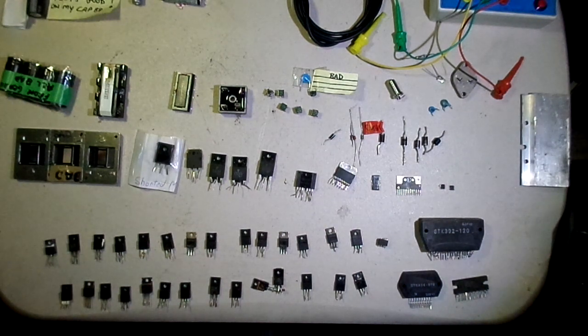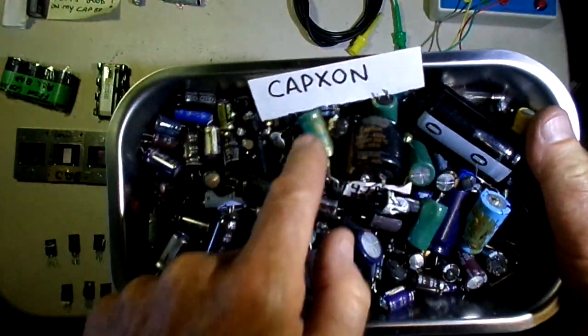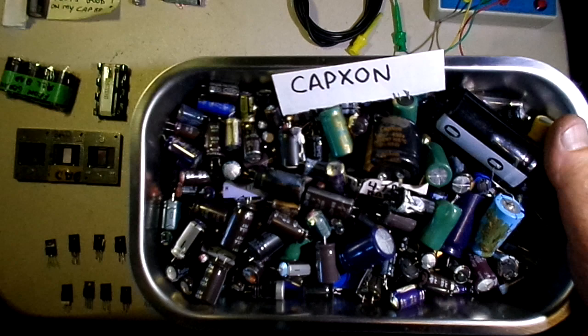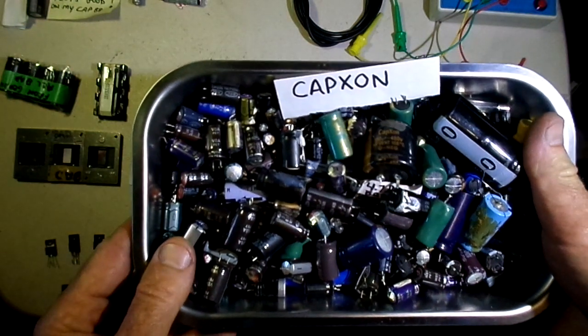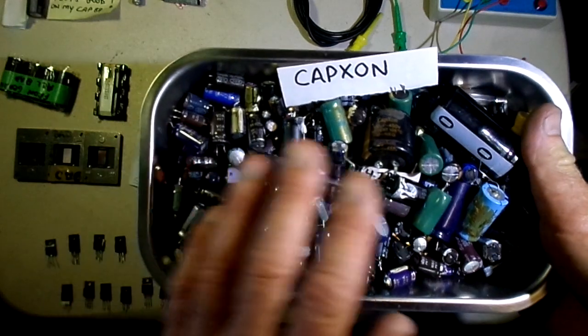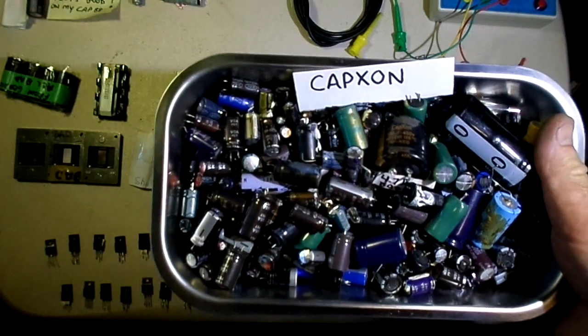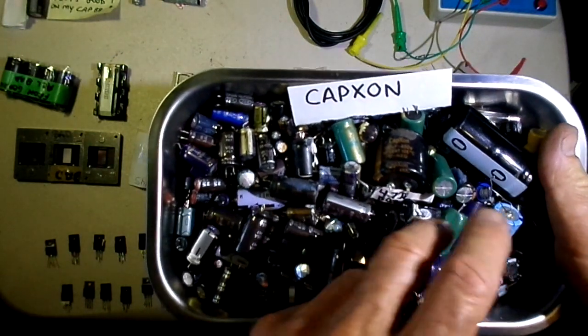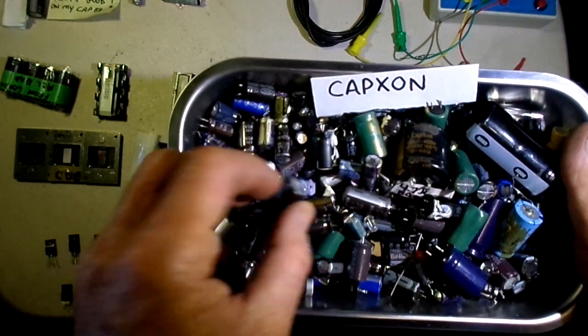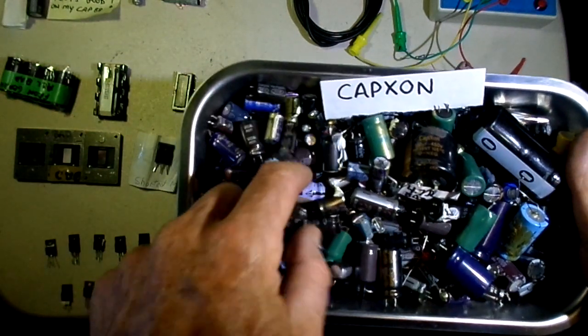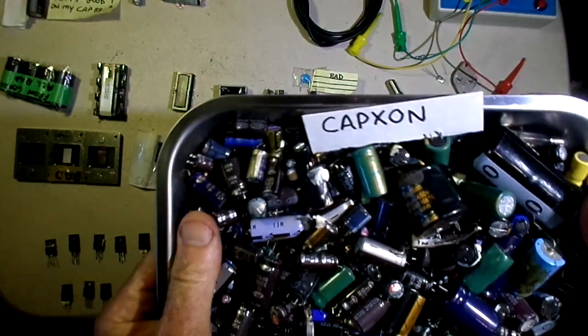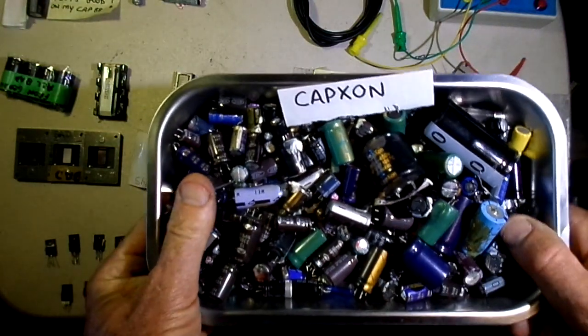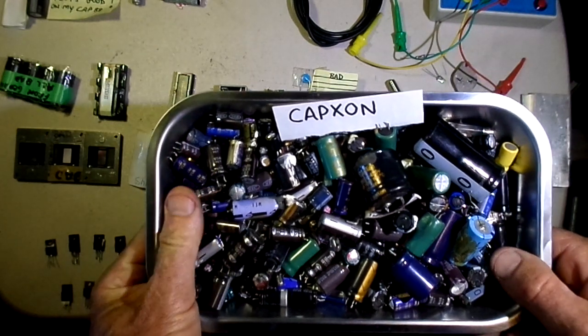Number one has been capacitors, of course. There was one particular company called CapXon that produced thousands and thousands of capacitors that were used in consumer electronic equipment. That made a lot of us repairmen money. From the repairman's point of view it was actually kind of a nice thing because we could count on a lot of repairs based on the fact that the capacitors were going bad. But over the years they've corrected the problem and you don't see as many bad capacitors as you would in the old days.